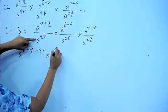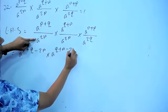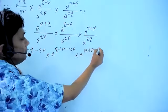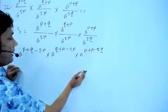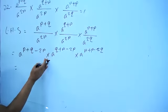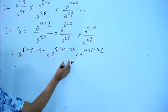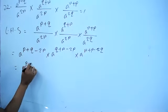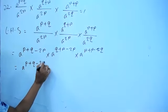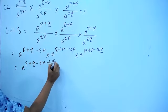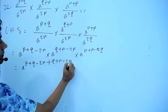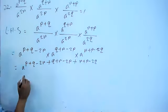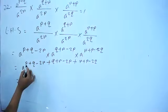When bases are the same, we add powers: a^(p+q-2r) × a^(q+r-2p) × a^(r+p-2q).